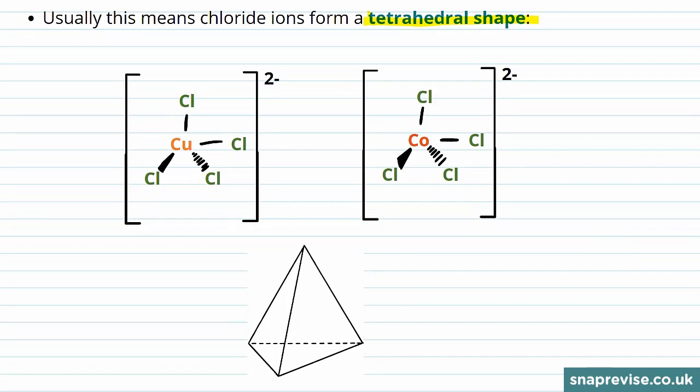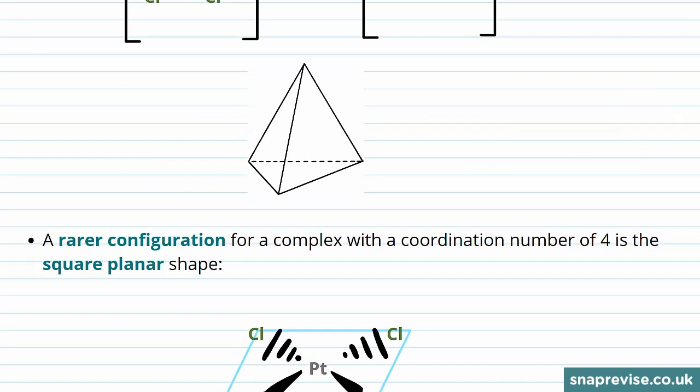We draw this tetrahedral shape by having two straight bonds showing that they're in the plane of the paper. So they're lying on the surface of the screen, and then we have a dashed bond which goes into the screen and a wedged bond which comes out. Both copper chloride and cobalt chloride form this tetrahedral shape, which is shown here by this triangular-based pyramid.